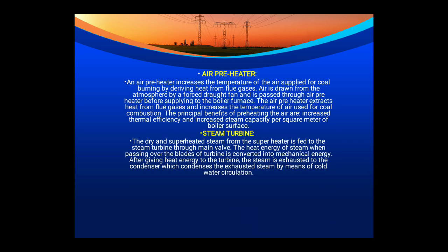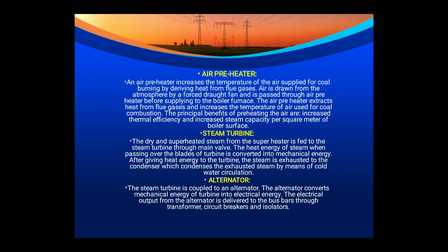In a thermal power plant, the impulse turbine is mainly used. The dry and superheated steam from the superheater is fed to the steam turbine through the main valve. The heat energy of steam, as it passes over the turbine blades, is converted into mechanical energy. The exhaust steam is then condensed in the condenser using cold water circulation. The alternator, an AC generator, is coupled with the steam turbine and converts mechanical energy into electrical energy. This is supplied to the bus bar for transmission via a step-up transformer, circuit breaker, relays, isolators, and switchgear devices.